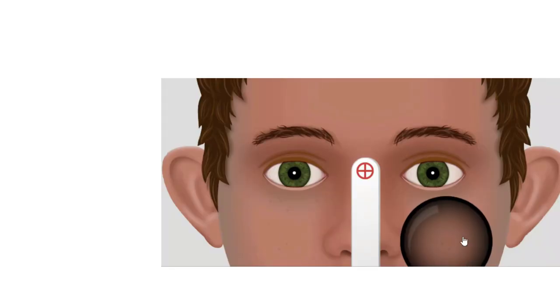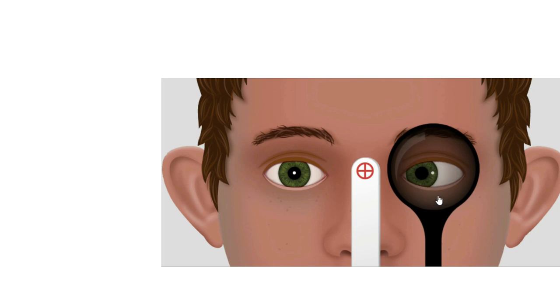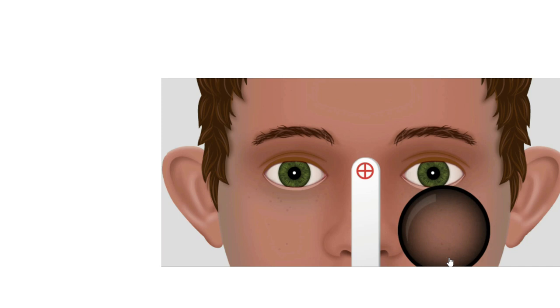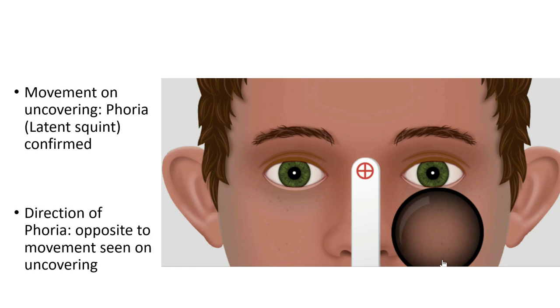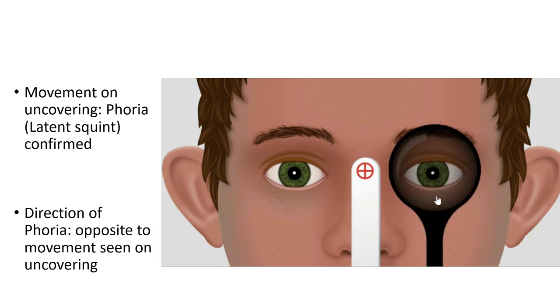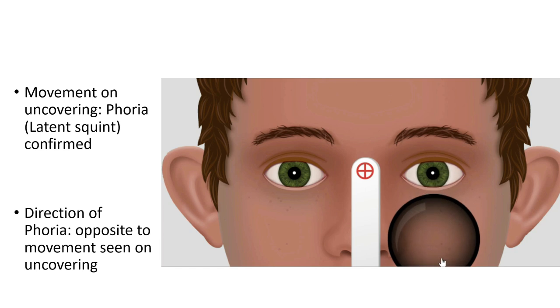If on doing the uncover test a movement happens in the eye, that means a latent squint is confirmed. In this example, we cover the left eye — no movement on the right eye means no manifest squint on the direct cover test. But on uncovering the left eye, a movement is seen, which means the left eye had moved when it was covered. That means there was a latent squint — a phoria. Because binocular vision was broken on covering, the eye moved. On uncovering, since binocular vision is re-established, the left eye moves back to take up fixation. The eye moved outwards, meaning the deviation under cover was inward — this is an esophoria.